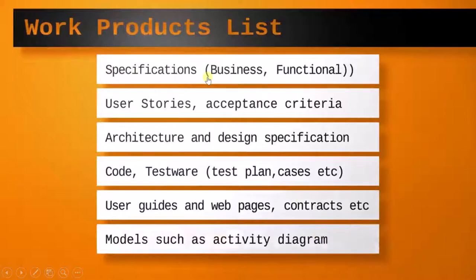One type is specification — it could be a business specification, functional requirement, or a security requirement. Any kind of requirement will be called a specification. Other documents include user stories, acceptance criteria, architecture, design specification, and code.